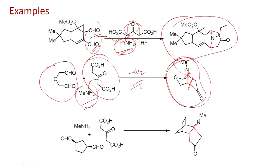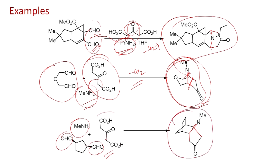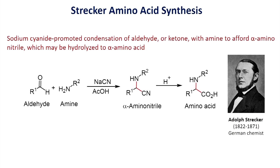Similarly, you can couple the dialdehyde with a keto dicarboxylic acid and methylamine to give a bicyclic ketone as a product, where you generate two carbon-nitrogen bonds and two carbon-carbon bonds. The imine acts as an electrophile and undergoes addition with the enol of the keto carboxylic acid; it can further react with another aldehyde by addition reaction; then decarboxylation gives the ketone. When you heat, decarboxylation takes place to generate the bicyclic ketone. A similar reaction with a dialdehyde and methylamine with an enol from a keto dicarboxylic acid gives the tricyclic ketone.